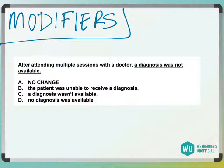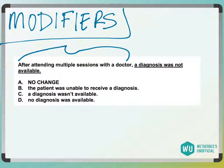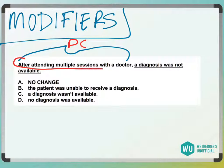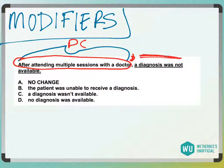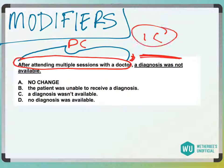So when we see a question like this, where we have a dependent clause in front — remember, a dependent clause is something that can't stand on its own as a sentence. So we have 'after attending multiple sessions with a doctor' — we have a dependent clause, then we have this comma, and then we have something that occurs after it, which should be an independent clause, because to have a full sentence, we need at least one independent clause.